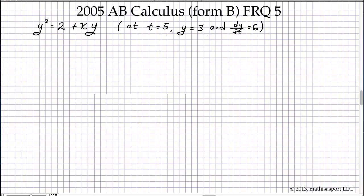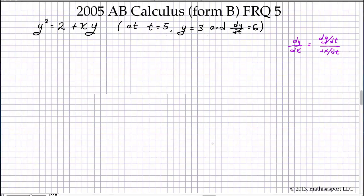The equation we're given is of the type that we'll need to use implicit differentiation for any questions related to the slope of the tangent line or the derivative in general, because y is either difficult or impossible to isolate. We're also given some information that will be useful in part D involving parametrizing this curve — namely that dy/dx can be taken as the ratio of dy/dt and dx/dt.